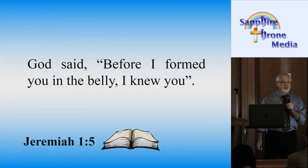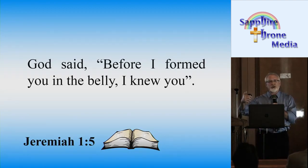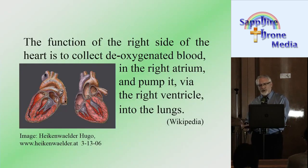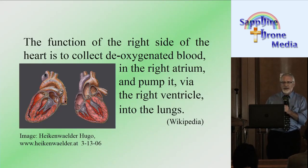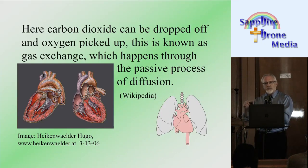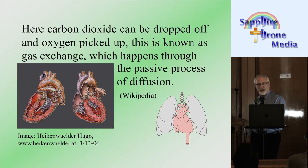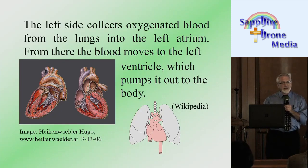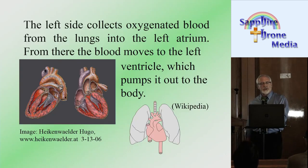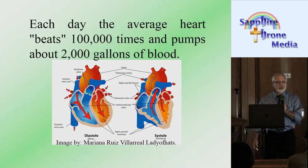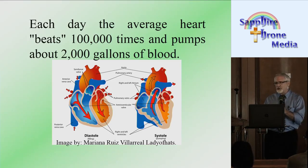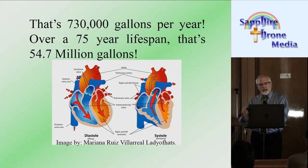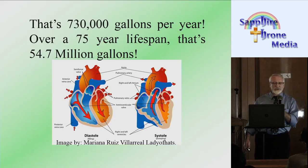The human embryonic heart begins beating around day 21 after conception, and it is unknown how blood circulates for the first 21 days in the absence of a functioning heart — this is simply another one of God's awesome miracles. God said, 'Before I formed you in the belly I knew you.' Each day the average heart beats 100,000 times and pumps about 2,000 gallons of blood — that's 730,000 gallons per year and over a 75-year lifespan, 54.7 million gallons.